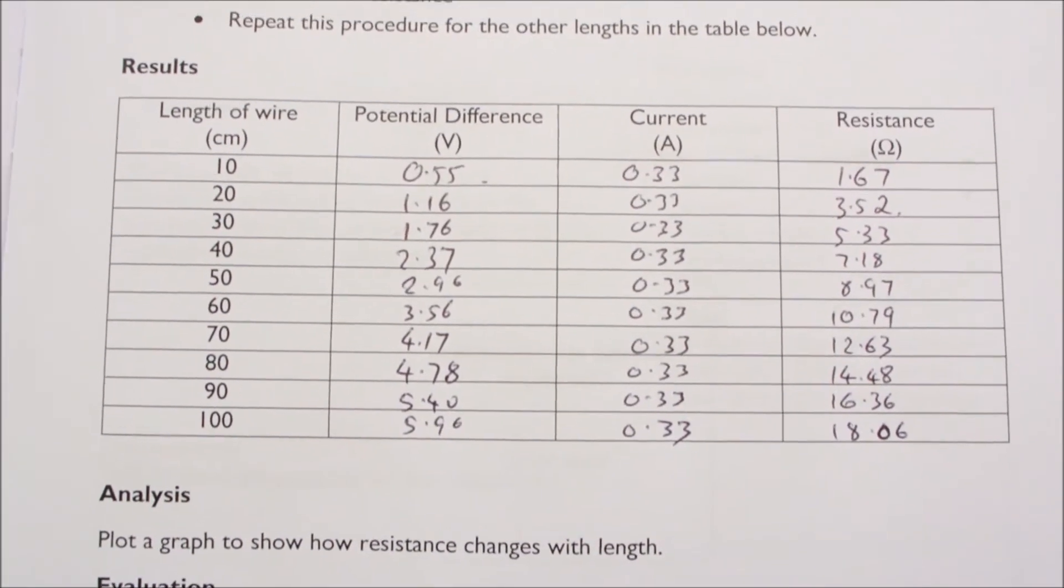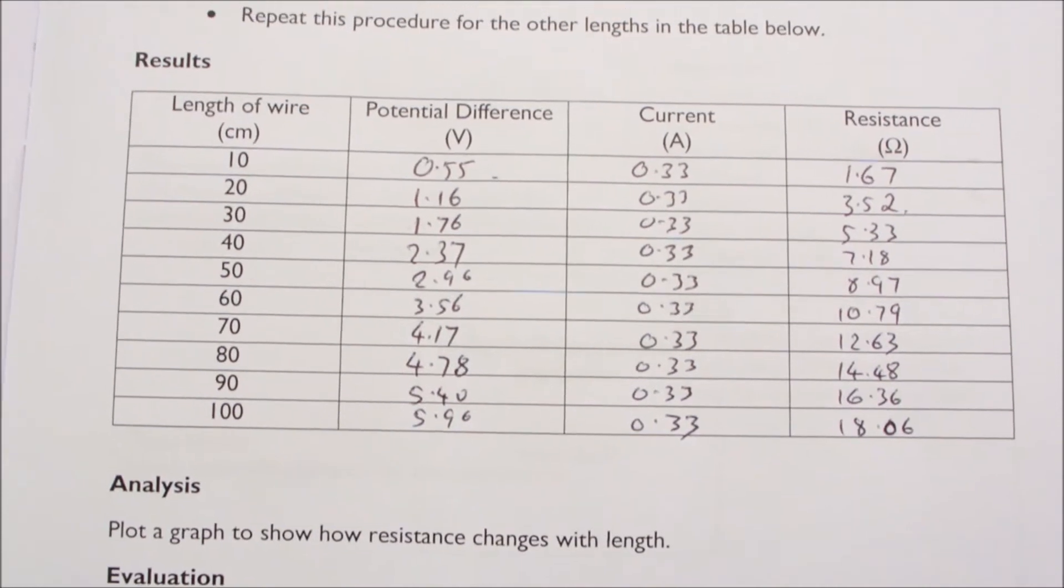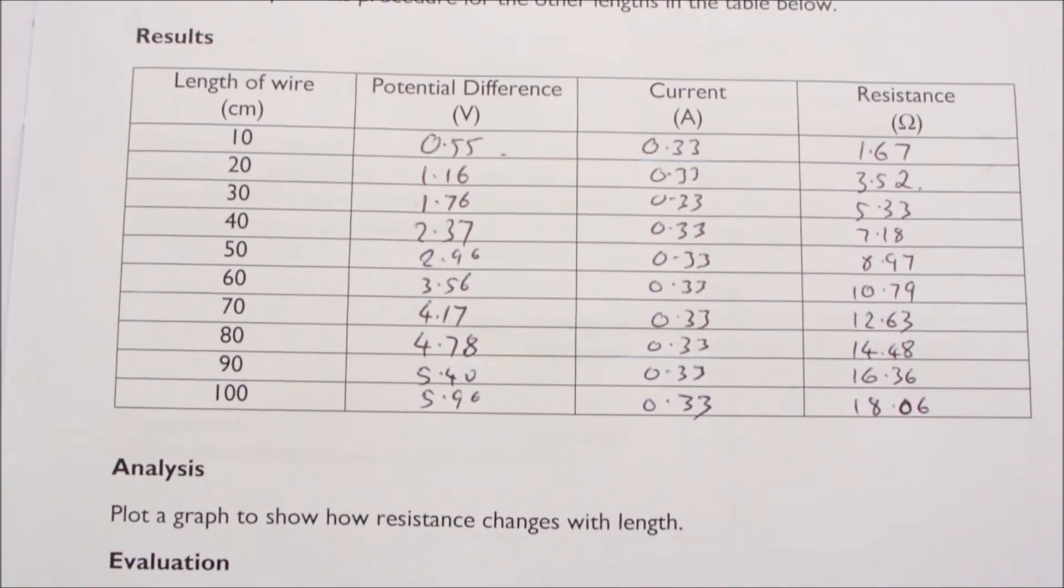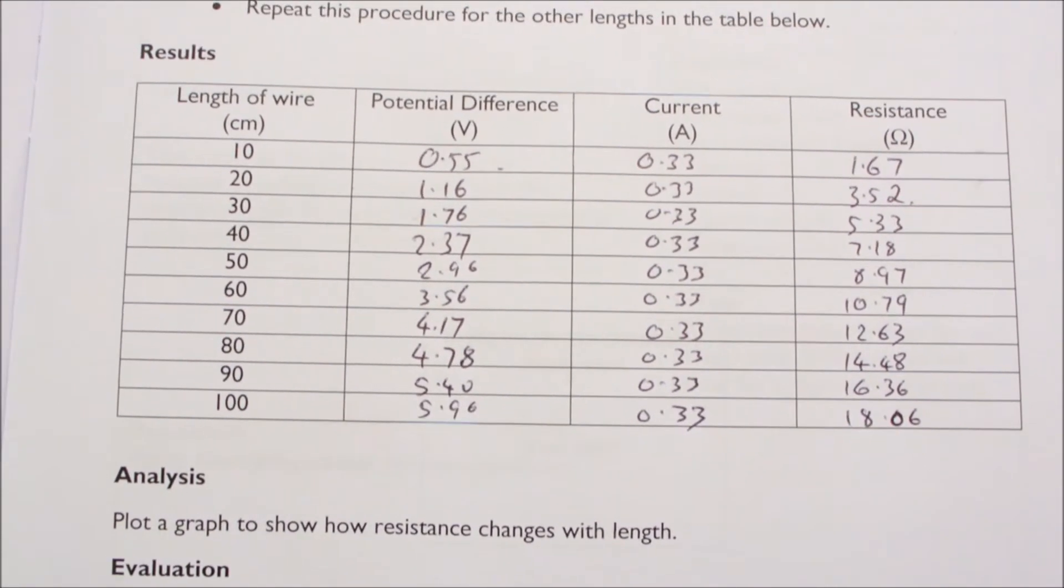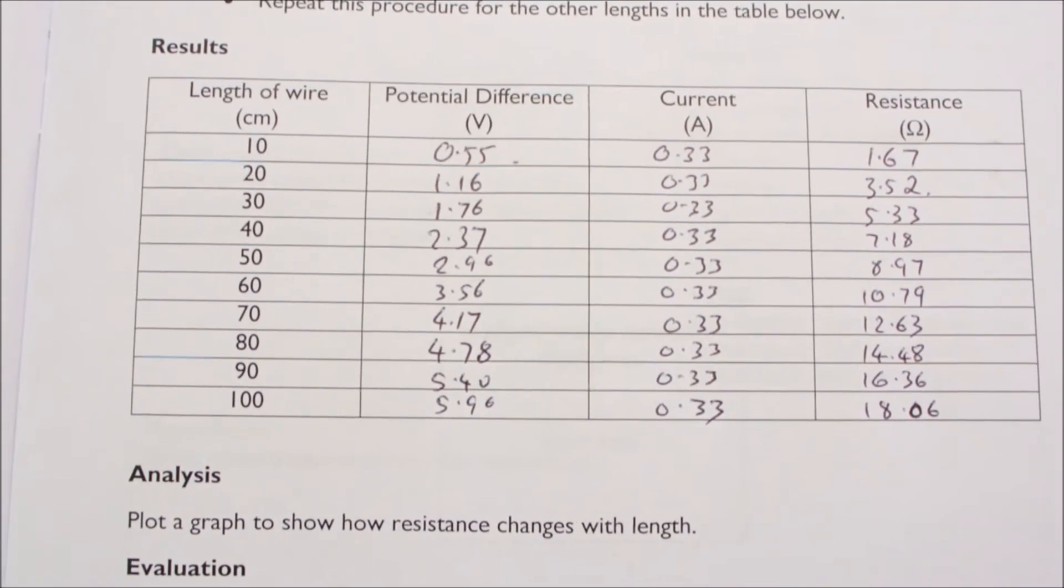And here's the final results table with all the resistances calculated. And you can see that the resistance changes from 1.67 ohms at 10cm all the way up to 18.06 ohms for the 100cm.